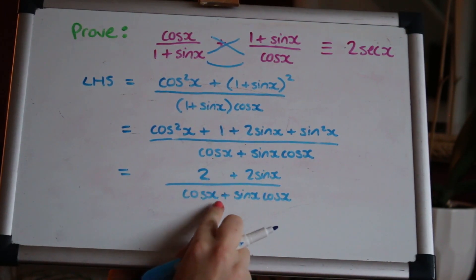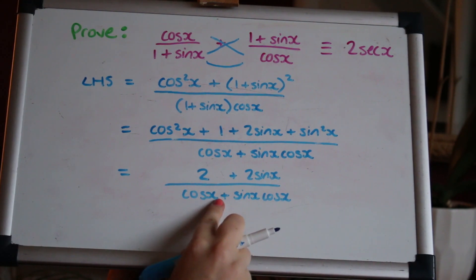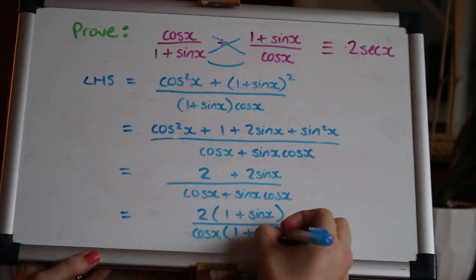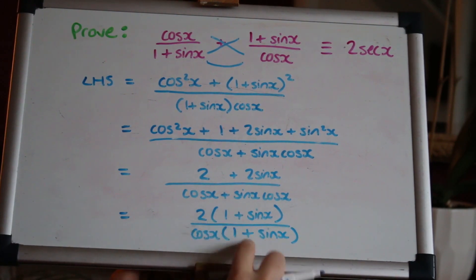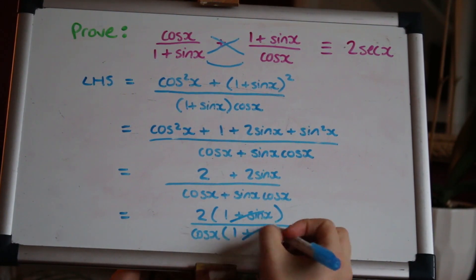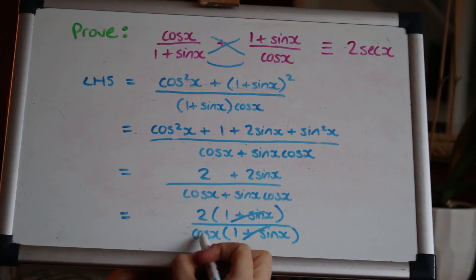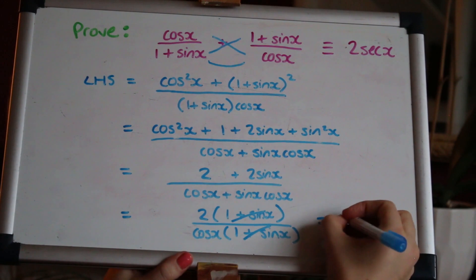If I factorize the top and the bottom, I expanded out the bottom but if I refactorize it again then something might cancel there. Yes, so the (1+sinx) bracket will cancel leaving us with just 2/cosx which is the same as 2 times 1/cosx which as we know is 2secx.